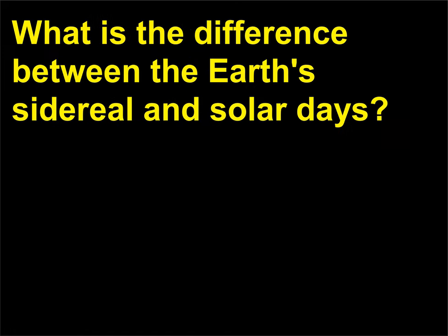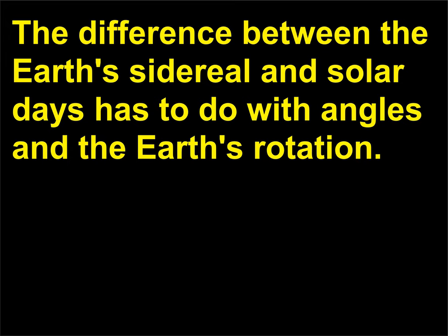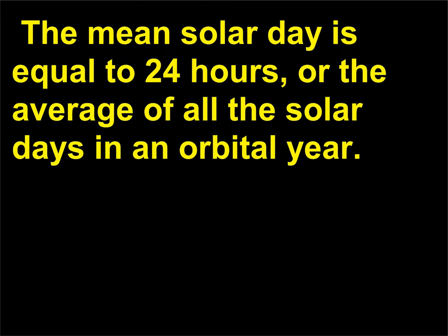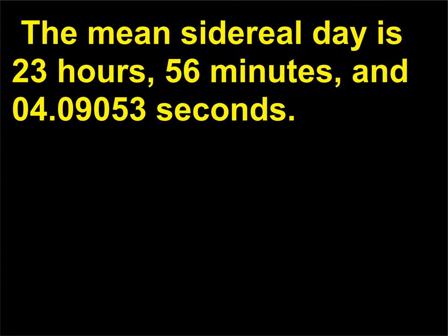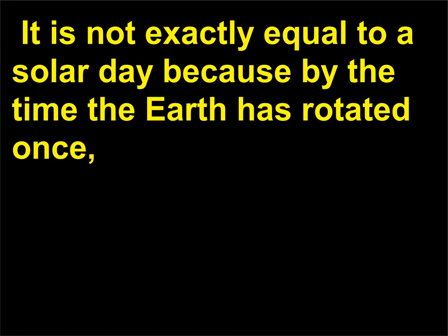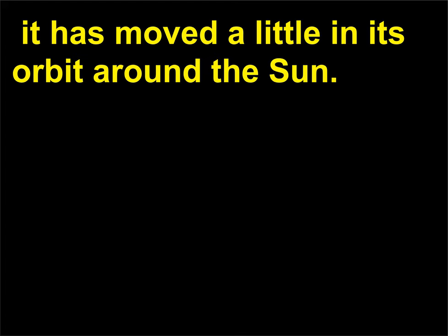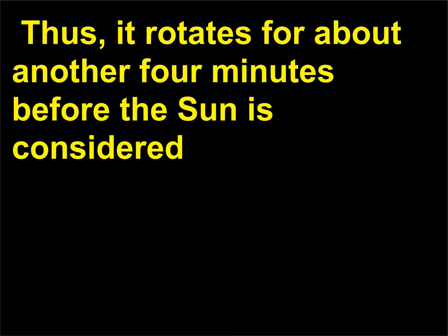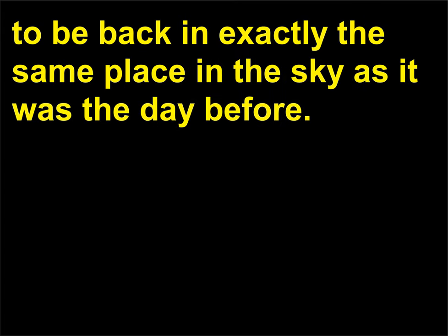What is the difference between the Earth's sidereal and solar days? The difference between the Earth's sidereal and solar days has to do with angles and the Earth's rotation. The mean solar day is equal to 24 hours, or the average of all the solar days in an orbital year. The mean sidereal day is 23 hours, 56 minutes, and 04.09053 seconds. It is not exactly equal to a solar day because by the time the Earth has rotated once, it has moved a little in its orbit around the Sun. Thus, it rotates for about another four minutes before the Sun is considered to be back in exactly the same place in the sky as it was the day before.